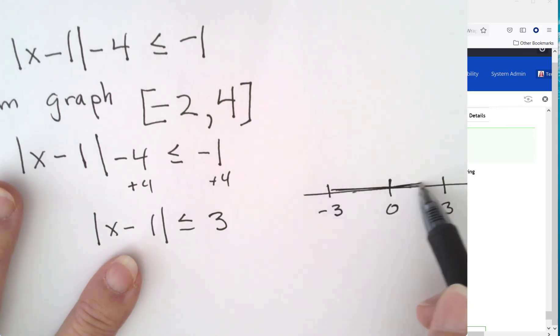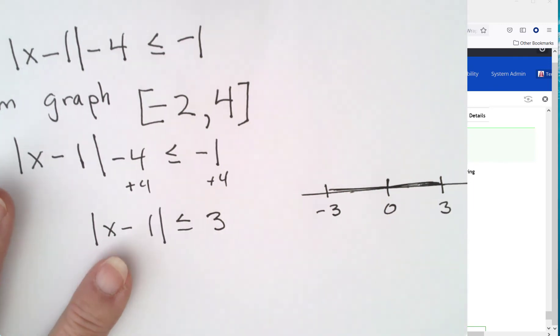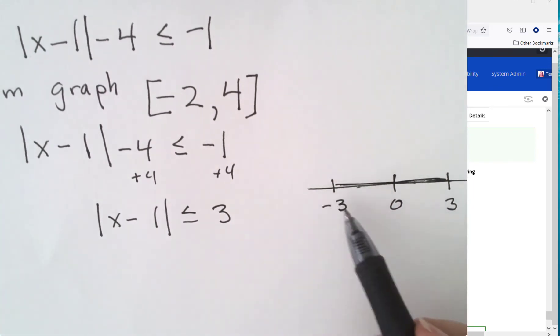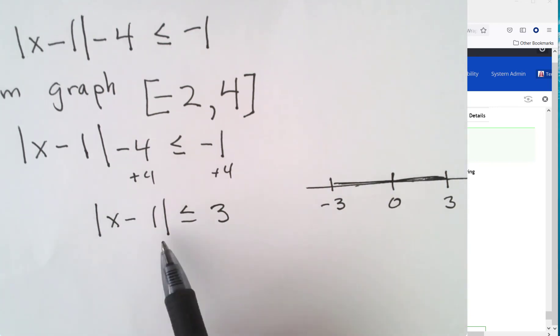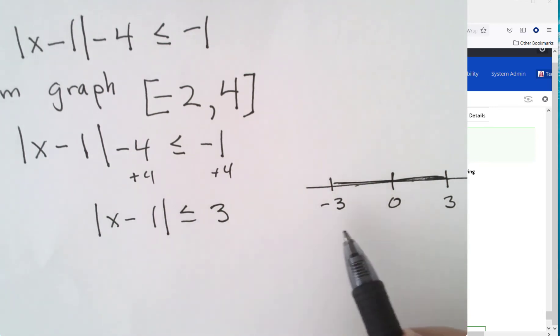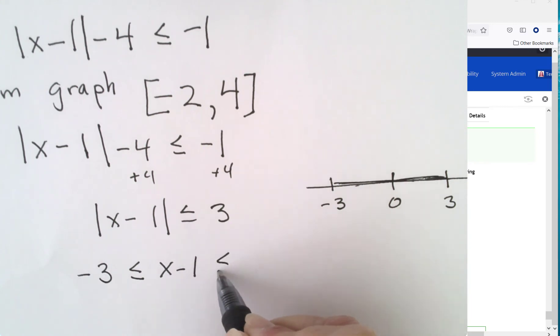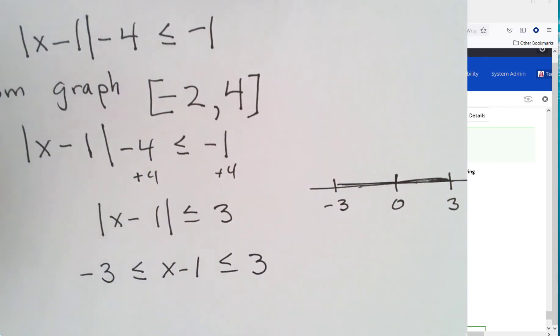Now this is not your final graph but this tells you this is a compound inequality because it wants the middle piece. So take your absolutes off, use negative 3 and 3 and then solve it all together.